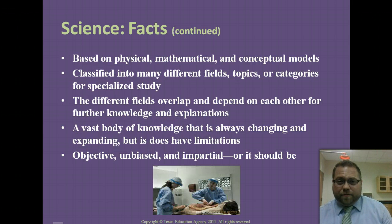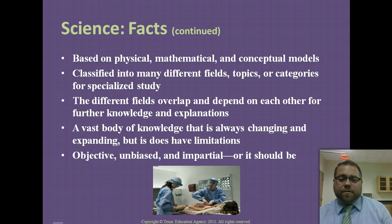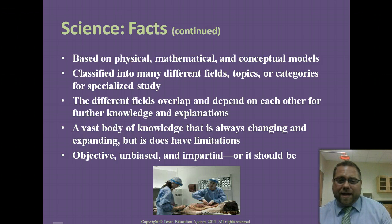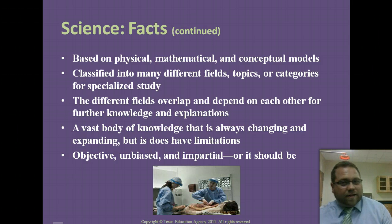There are many different types and fields of science. Even major sciences like biology have subcategories: molecular biology, marine biology, microbiology, and all sorts of others. Science should be objective, unbiased, and impartial, meaning that you follow an approach and don't come in with a certain bias. A lot of times that's not how things work out, but that's how it should be.